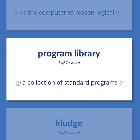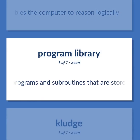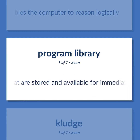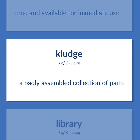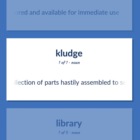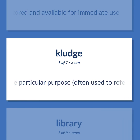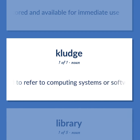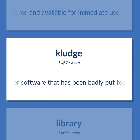Computing. Library: A collection of standard programs and subroutines that are stored and available for immediate use. A badly assembled collection of parts hastily assembled to serve some particular purpose, often used to refer to computing systems or software that has been badly put together.